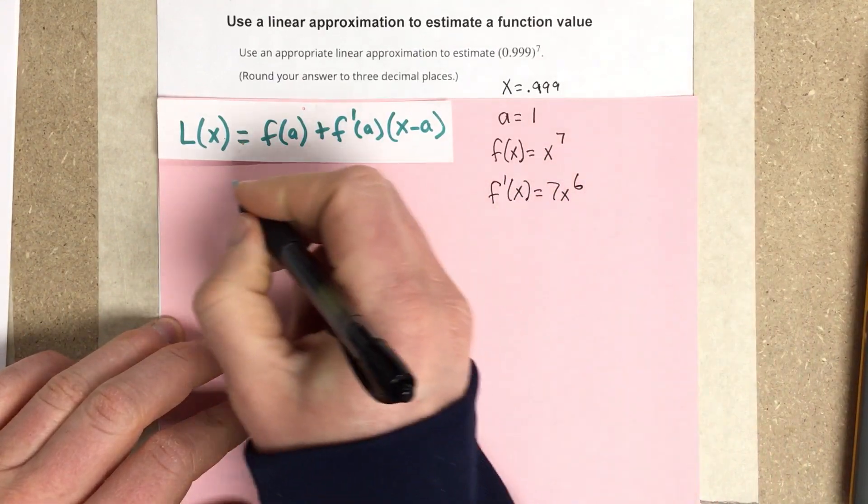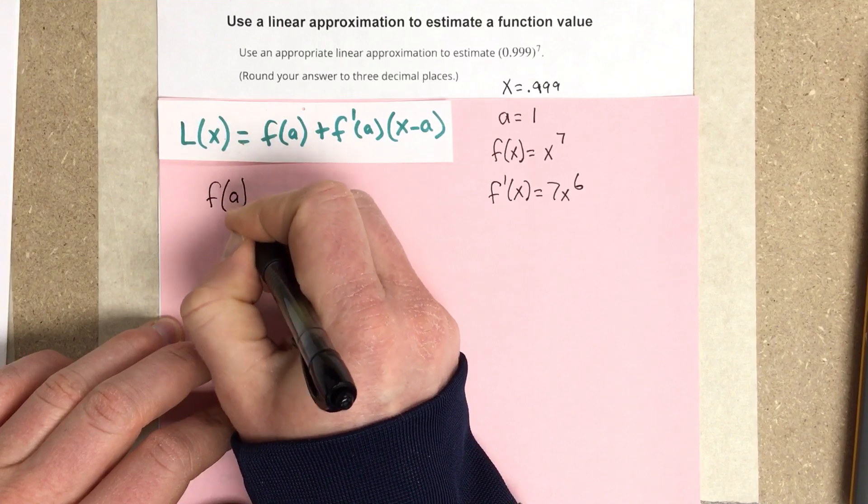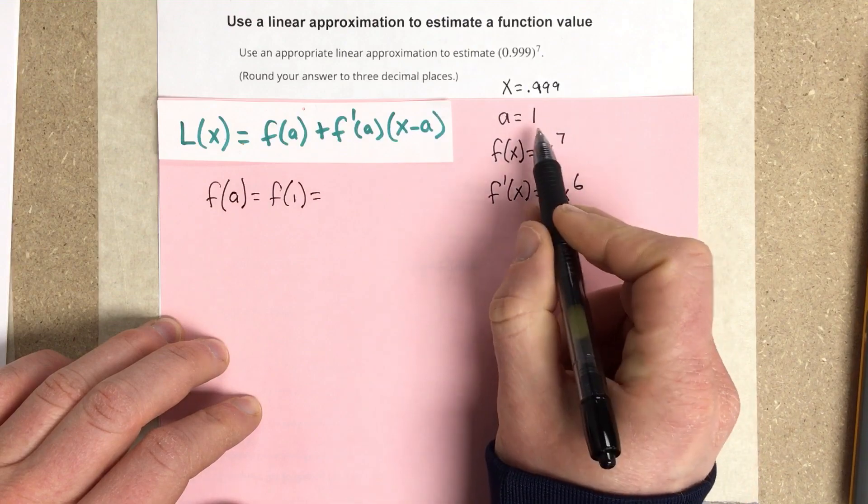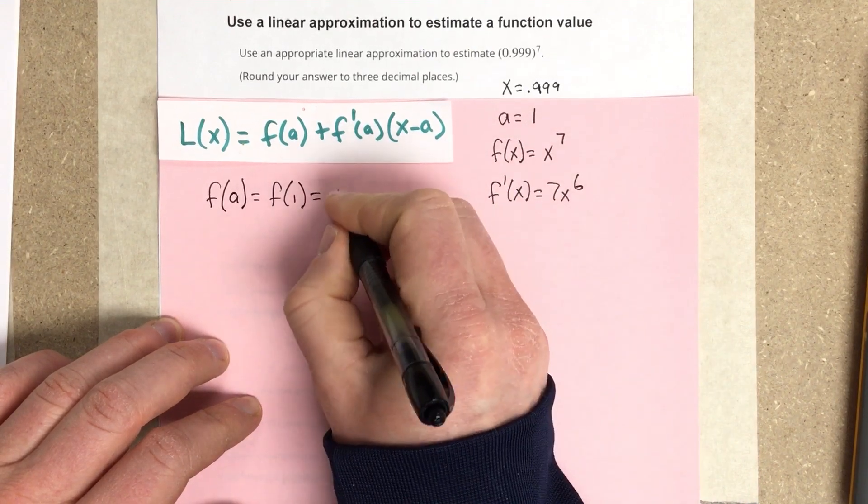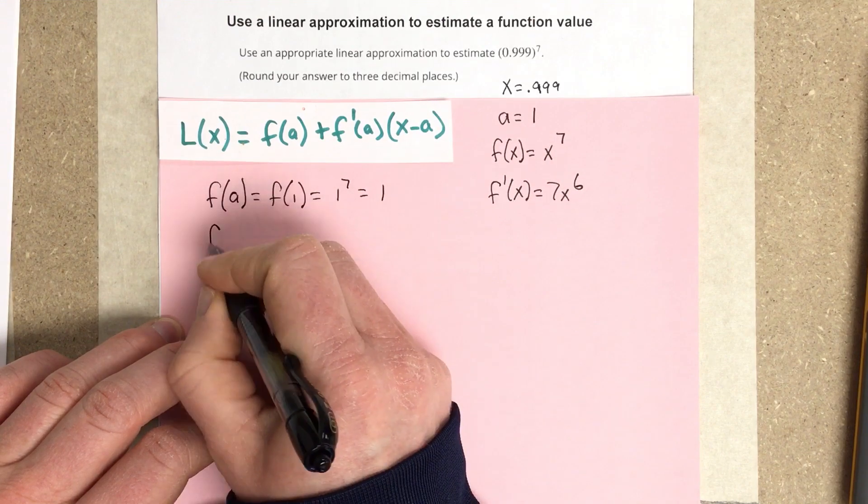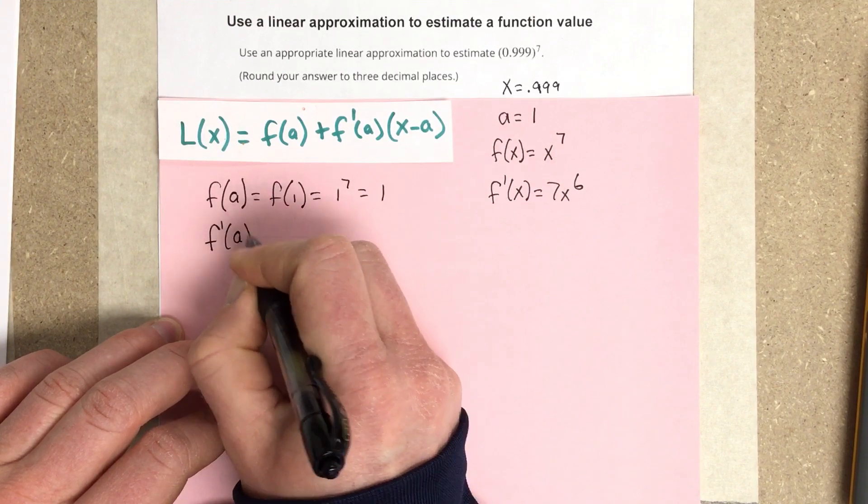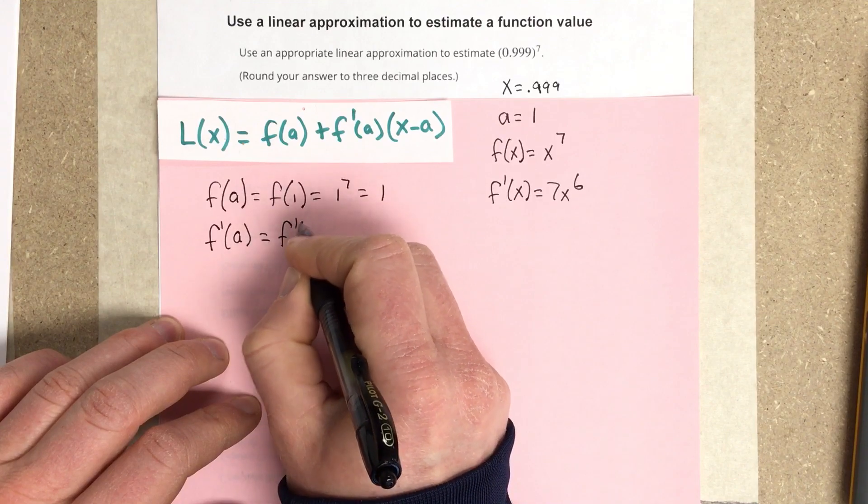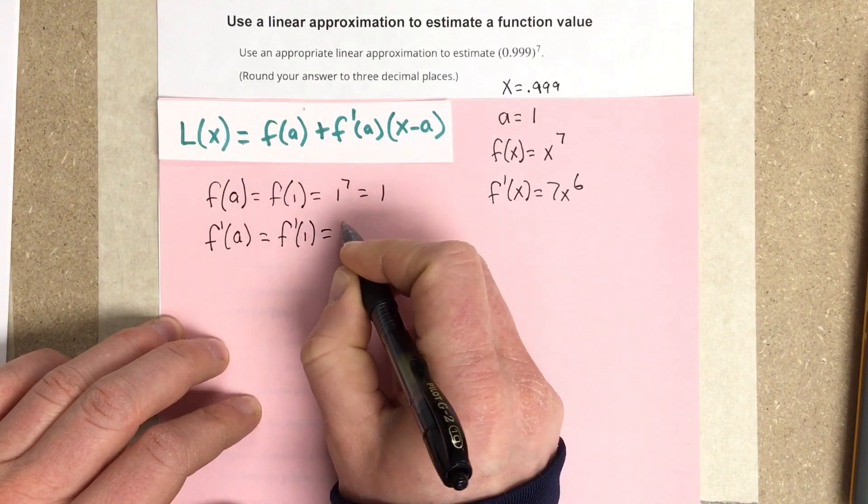Now, I need to know f of a. So f of a is equal to f of 1, which if I take a and I plug it into the original function, that would be 1 to the 7th, which is 1. And then I need to find f prime of a, which would be f prime of 1, which ends up being 7.